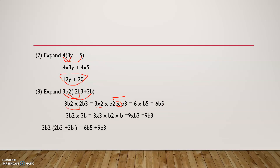Now for the second part: 3b squared times 3b. So 3 times 3 is 9, and b squared times b gives b cubed — power 2 plus power 1 equals power 3. So that's 9b cubed. Putting both terms together: 3b squared times (2b cubed plus 3b) equals 6b to the power 5 plus 9b cubed.